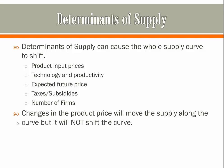Fifth, expected future price: if suppliers expect the price of corn to rise, they will sell less now and more later, so supply will decrease now. Also remember that changes in price don't affect the supply curve, just the quantity supplied. Note that decreases in supply or demand are shifts to the left, and increases in either are shifts to the right.